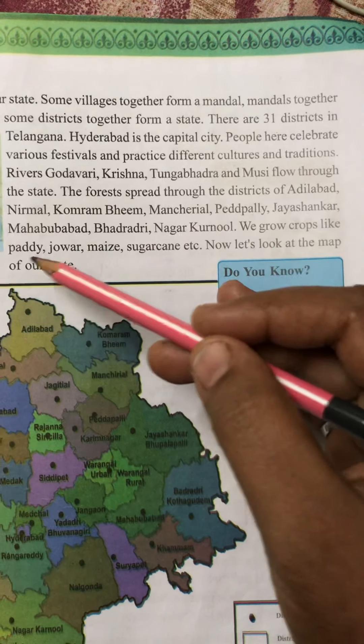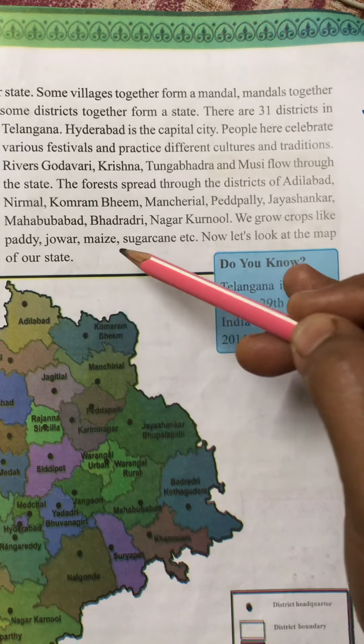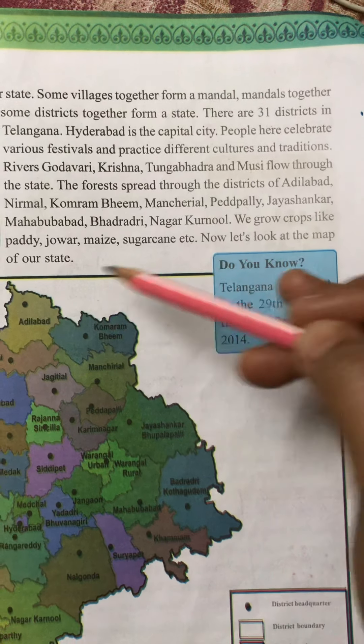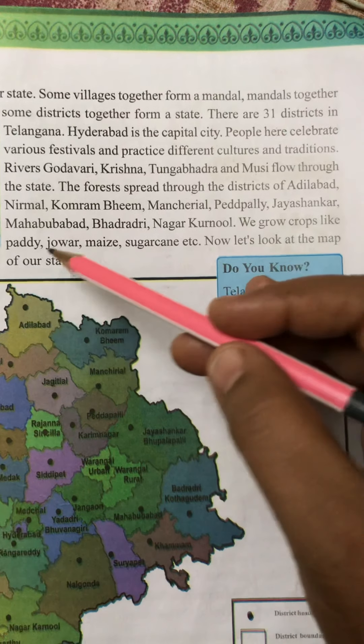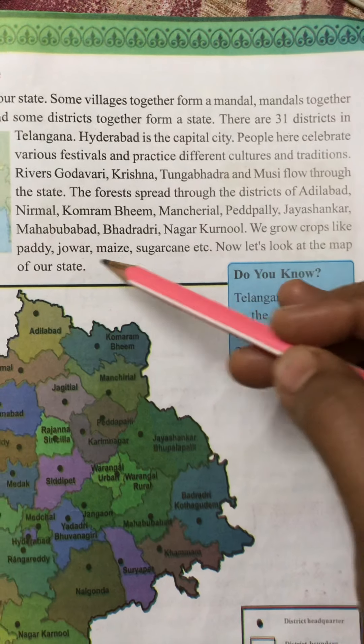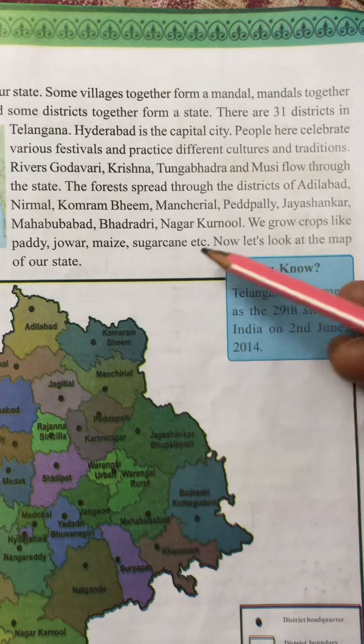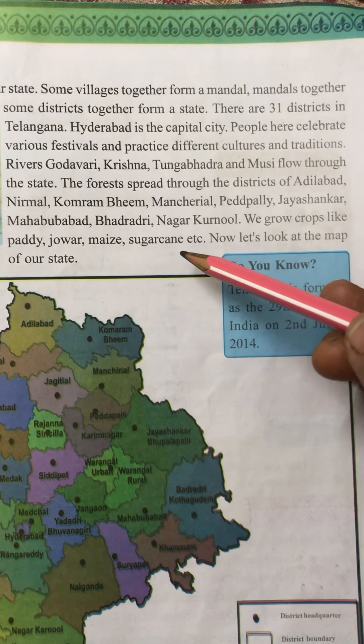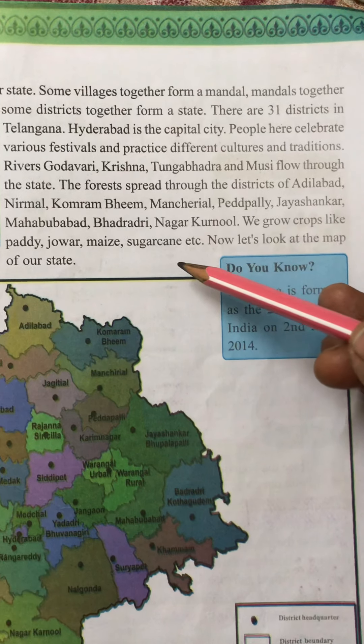We grow crops like paddy, jowar, maize, sugarcane, pulses, and other crops like jonnalu, mokkajonna, sugarcane, and cherakugadu in our state.